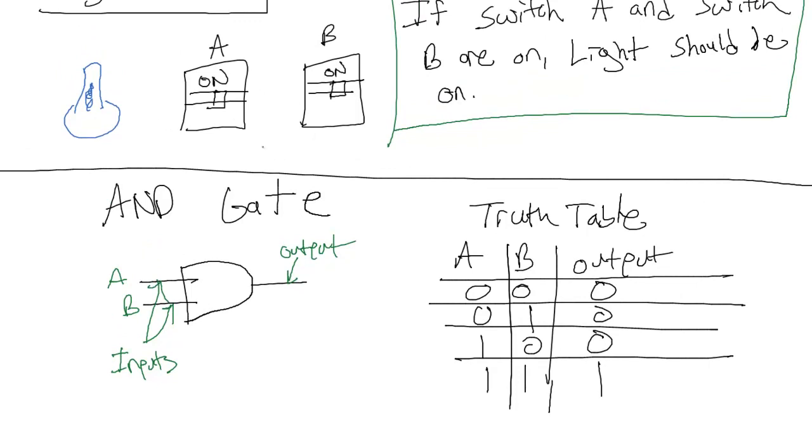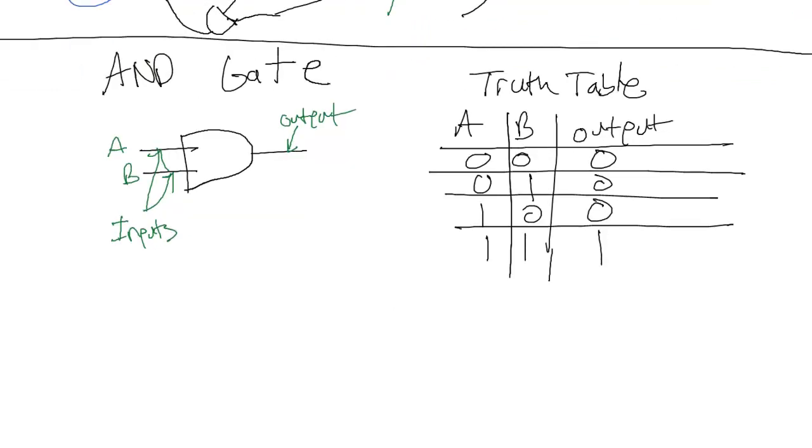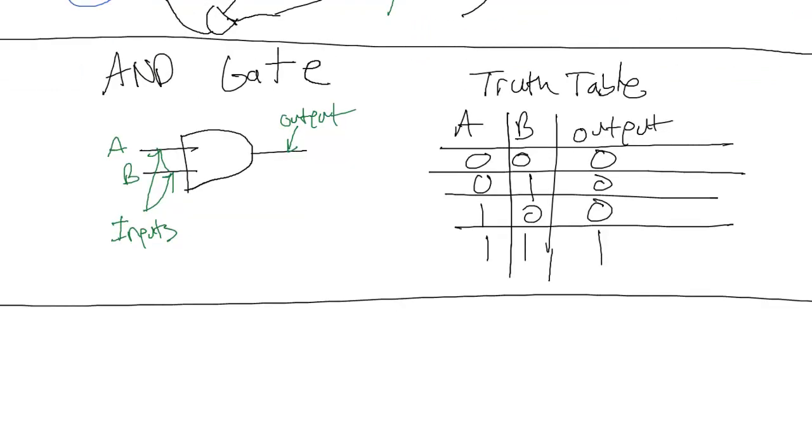So we could put an AND gate like this. And now this circuit here works with this problem. Let's move on. Let's go to another gate.